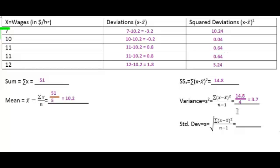Next, we just have to take the square root of 3.7, and that should give us approximately 1.92.